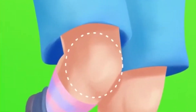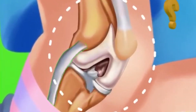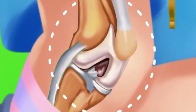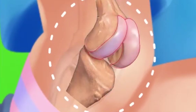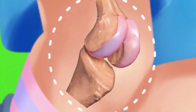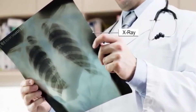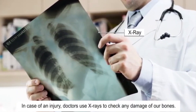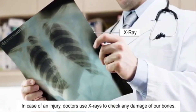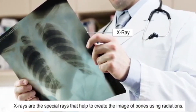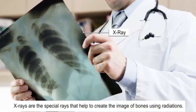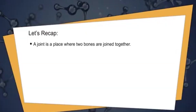There is a special tissue that holds the two bones of a joint in position; this is called the ligament. There is another soft tissue that covers a joint from outside; this is called the cartilage. Since bones are not visible from the outside, in case of an injury doctors use X-rays to check any damage. X-rays are special rays that help create images of bones using radiation.